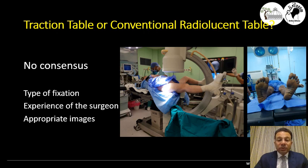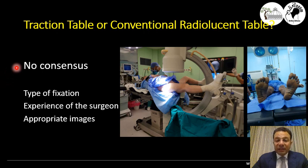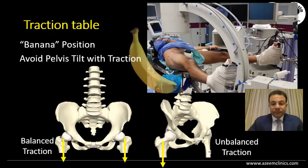Thinking about the reduction: it starts with the choice of patient position — whether to put the patient on a traction table or a conventional radiolucent table. In the literature there is no consensus; however, it depends on the experience of the surgeon, the appropriate images obtainable, and the type of patient — whether obese or not.